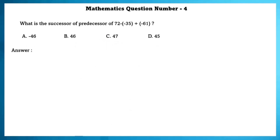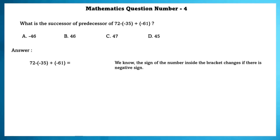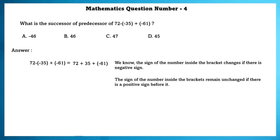Mathematics question number 4. What is the successor of the predecessor of 72 minus minus of 35 plus minus 61? The sign of a number inside brackets changes if there is a negative sign before it, and remains unchanged if there is a positive sign. Solving using these laws, the answer is 46.